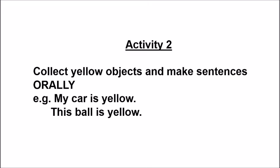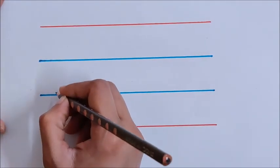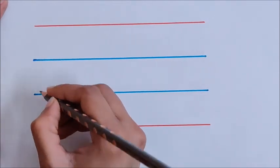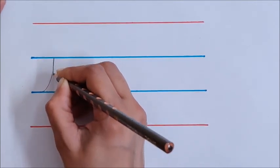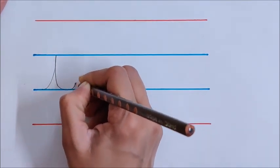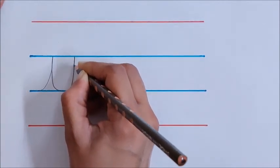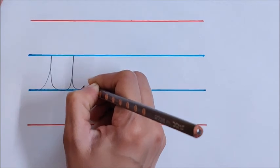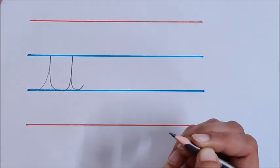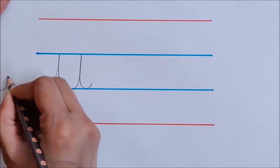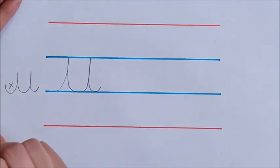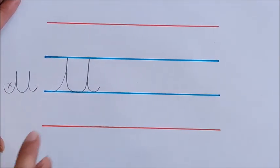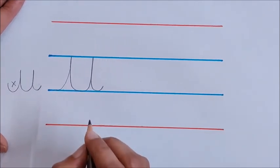Or if the child found a ball which is yellow in color, then the child to say holding the ball, 'This ball is yellow.' Enjoy the activities. Children, let us write letter U. Go up, come down, touch the blue line, go up, come down, and the tail. U. Don't write U like this. This is wrong. You should write U like this. Now let us write Y.